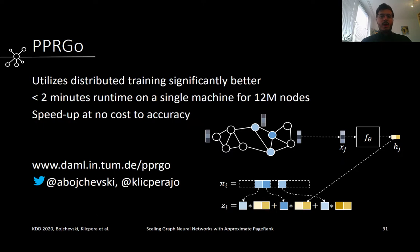In summary, our PPR-GO model utilizes distributed training significantly better than the baselines. On a single machine, it has less than 2 minutes total runtime, including training and inference for a graph of 12 million nodes. The speedup comes at no cost to accuracy. For more information, check out our paper, code, and additional material at the project webpage. Feel free to contact us if you have any questions. Thank you.